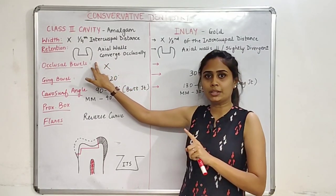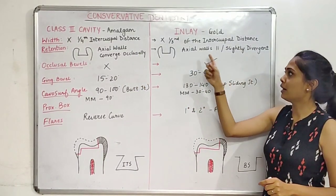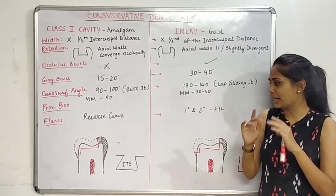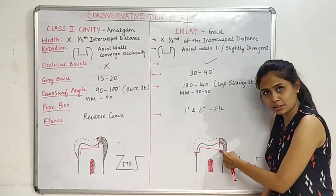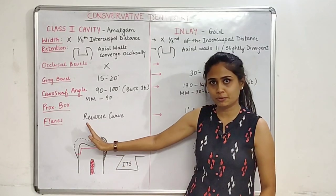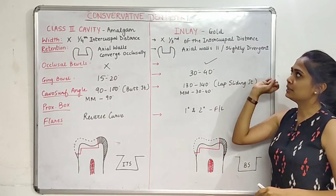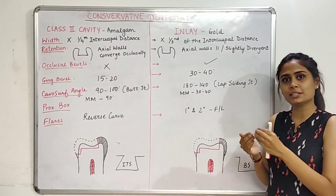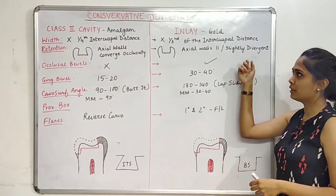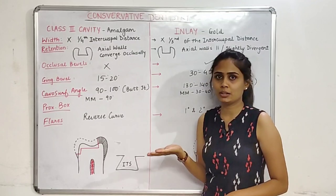The secondary retention for the Class 2 cavity is provided by a dovetail. For the inlay cavity, the primary retention is achieved with axial walls placed parallel or slightly divergent. The secondary retention is gained by the cement placed between the gold casting and the tooth structure. For the Class 2 cavity, no occlusal bevels are required, whereas the inlay cavity does require occlusal bevels.